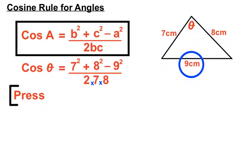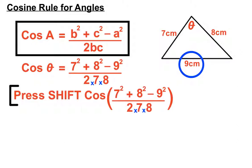Now as I said before, we've got a cosθ at the front. We don't want cosθ to be our final answer. We want θ to be our final answer. To find missing angles, we have to press shift at some stage. So we press shift cos, and then we type in very carefully all the rest of the right hand side there. 7 squared plus 8 squared minus 9 squared over 2 times 7 times 8.